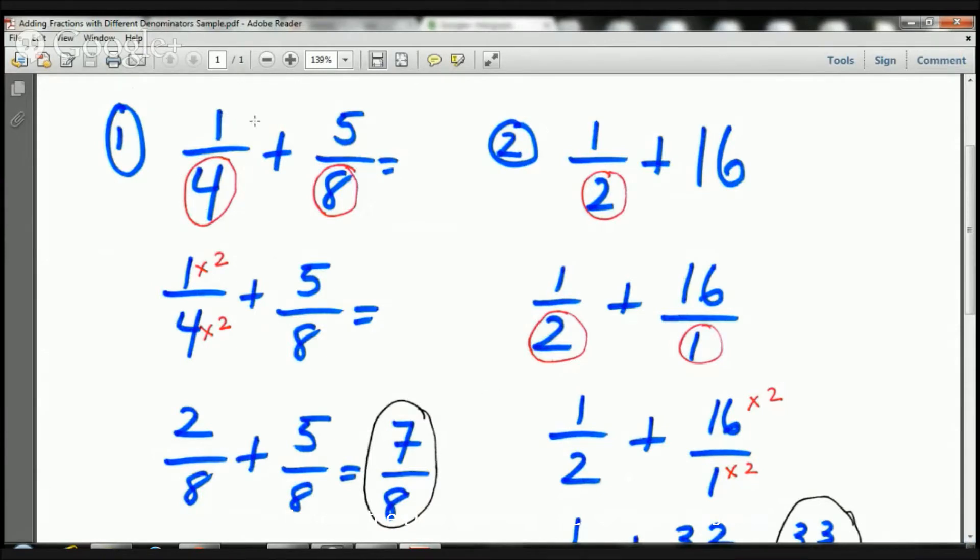So here we have 1/4. Here we have 5/8. Look, we've got different denominators. We have a problem, boys and girls. We have to make the denominators the same. How do I do that? This is what I typically do.